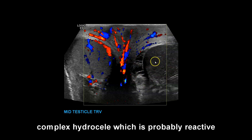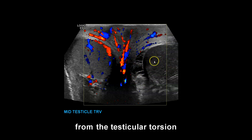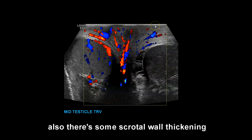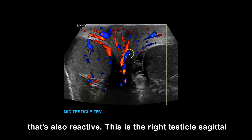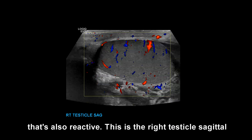Complex hydrocele, which is probably reactive from the testicular torsion. There's also some scrotal wall thickening due to edema and some hyperemia here — that's also reactive.